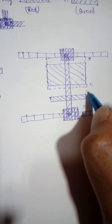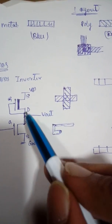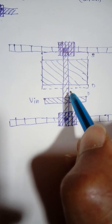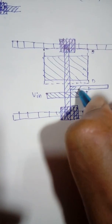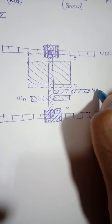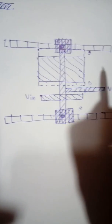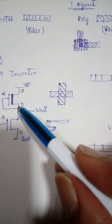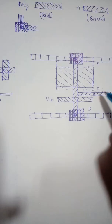The output is taken between the drain terminals. The N-plus layer already present in that region can be extended outward and labeled Vout. Alternatively, you can extend the polysilicon layer and label it Vout — either option is valid since both points are electrically the same. If you extend from the N-plus region, use the N-plus layer; if from the polysilicon point, use the polysilicon layer. This completes the layout diagram for the NMOS inverter circuit.